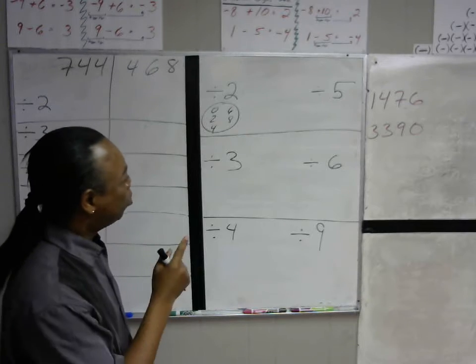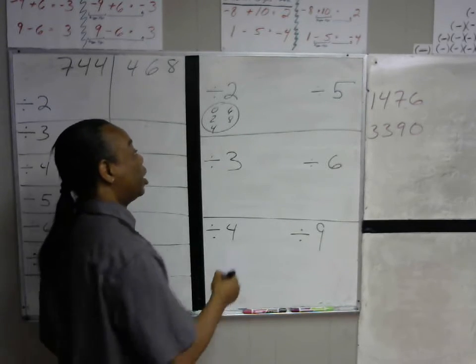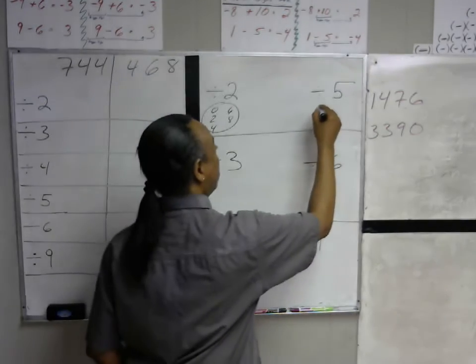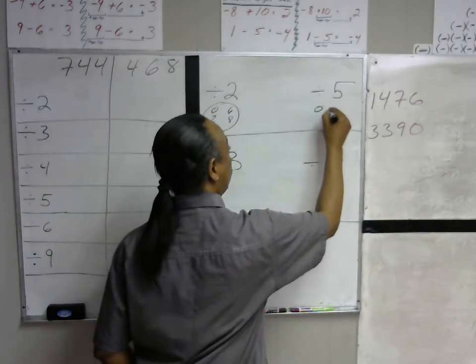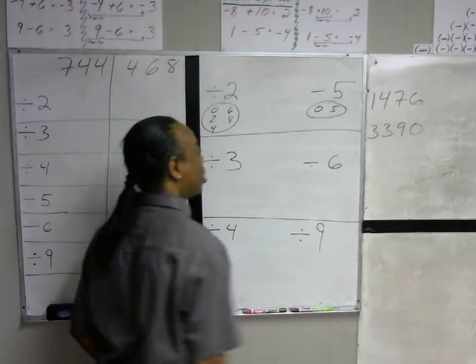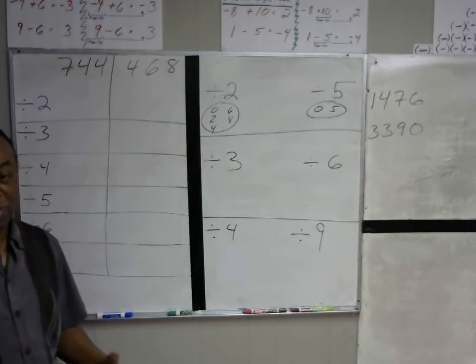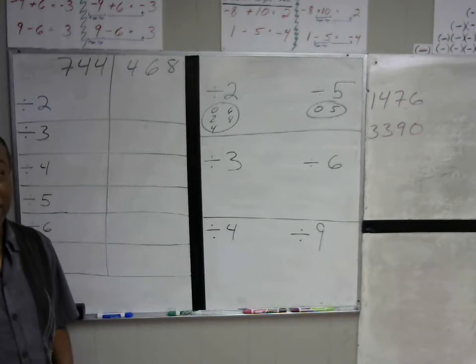To be divisible by 5, the number needs to end in either a 0 or 5. So if it ends in 0 or 5, it's divisible by 5.